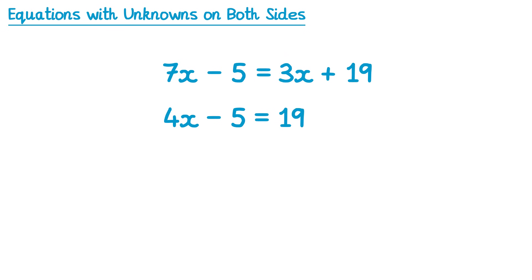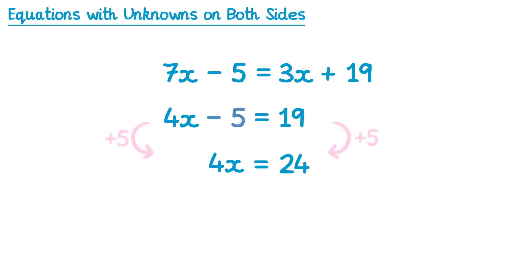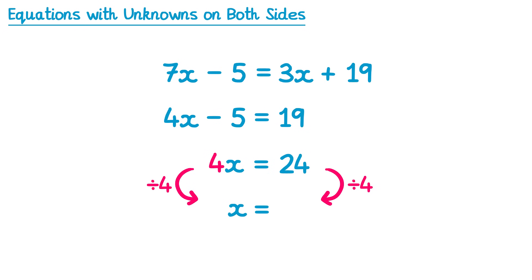Then we solve the two-step equation in the usual way. Because of this subtract 5, we're going to add 5 to both sides. On the left-hand side, negative 5 plus 5 is 0, so we just have 4x. On the right-hand side, 19 plus 5 is 24. Then because of this 4, we divide both sides by 4. 4x divided by 4 is 1x, and 24 divided by 4 is 6, so x is equal to 6.